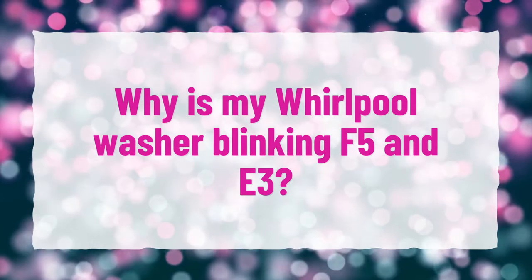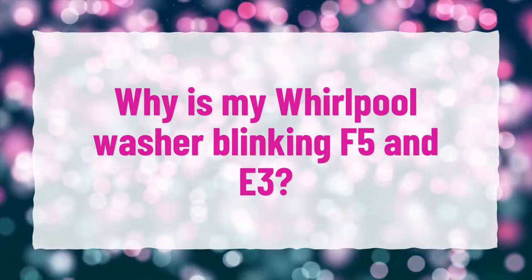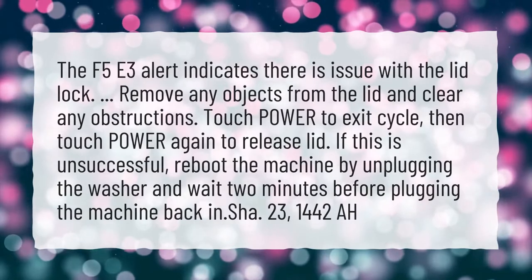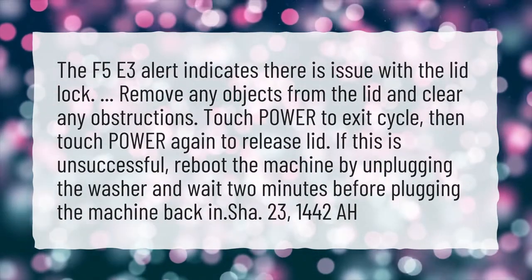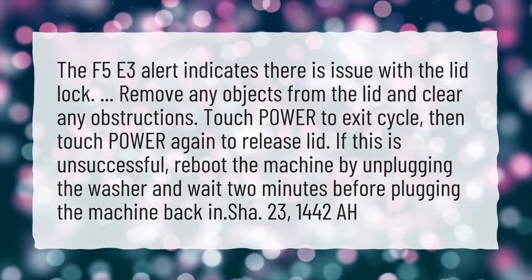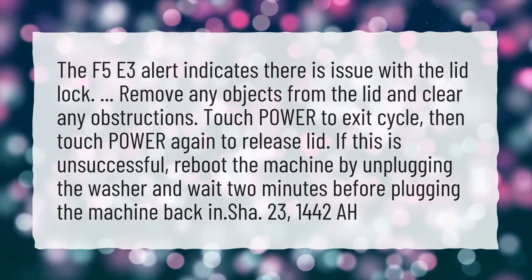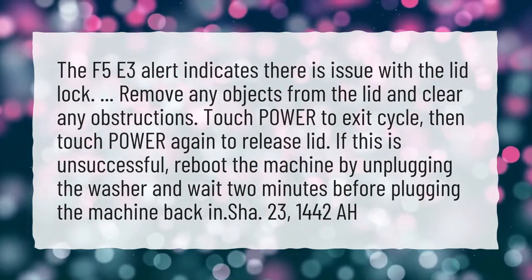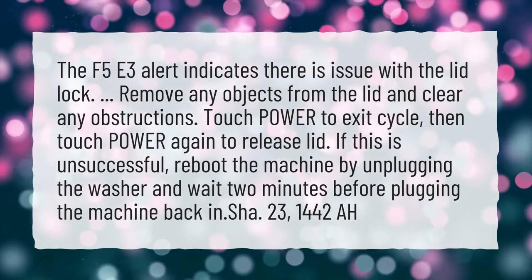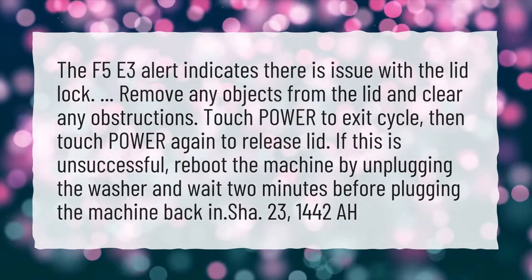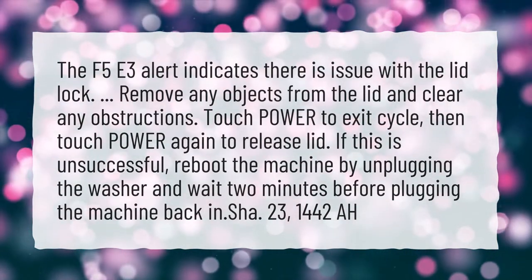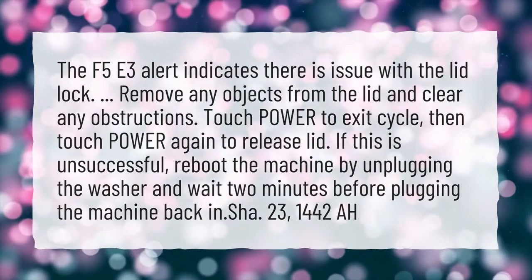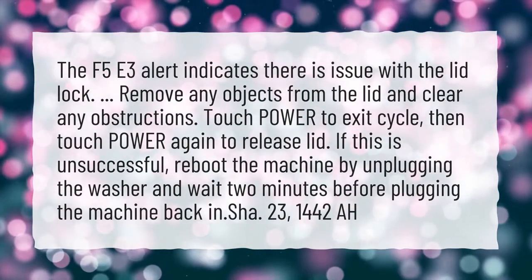Why is my Whirlpool washer blinking F5 and E3? The F5 E3 alert indicates there is an issue with the lid lock. Remove any objects from the lid and clear any obstructions. Touch power to exit the cycle, then touch power again to release the lid. If this is unsuccessful, reboot the machine by unplugging the washer and wait 2 minutes before plugging the machine back in.